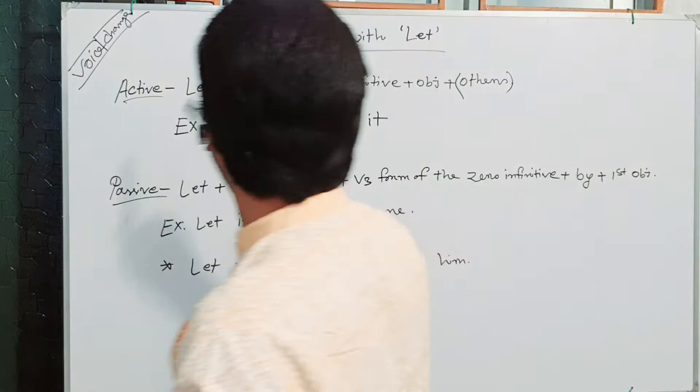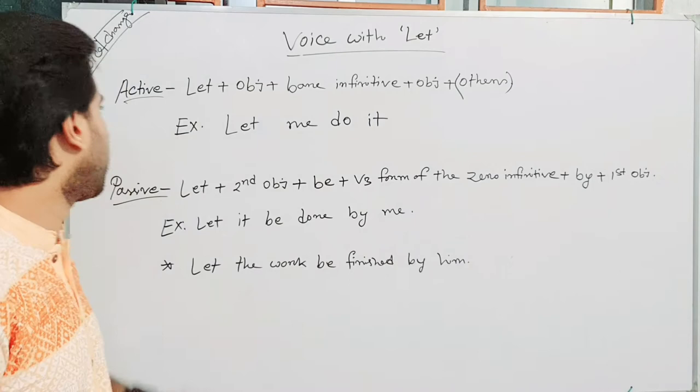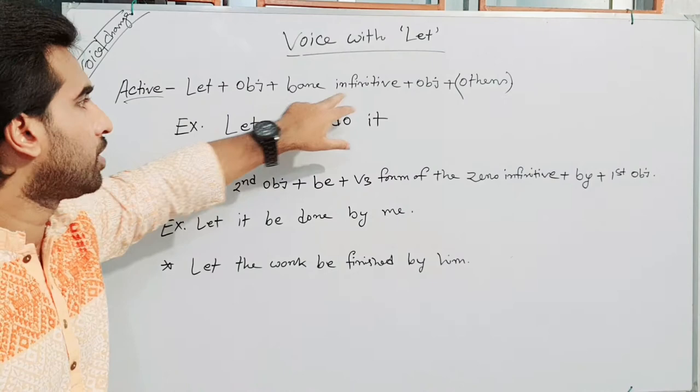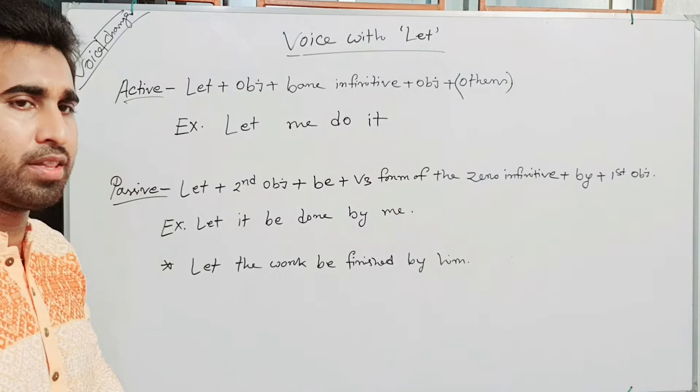Now, voice with 'let'. Here is voice with 'let'. Look at this. The structure of an active sentence or active voice is: let plus object plus bare-infinitive. We know about bare-infinitive, plus object, plus others — if other persons exist.